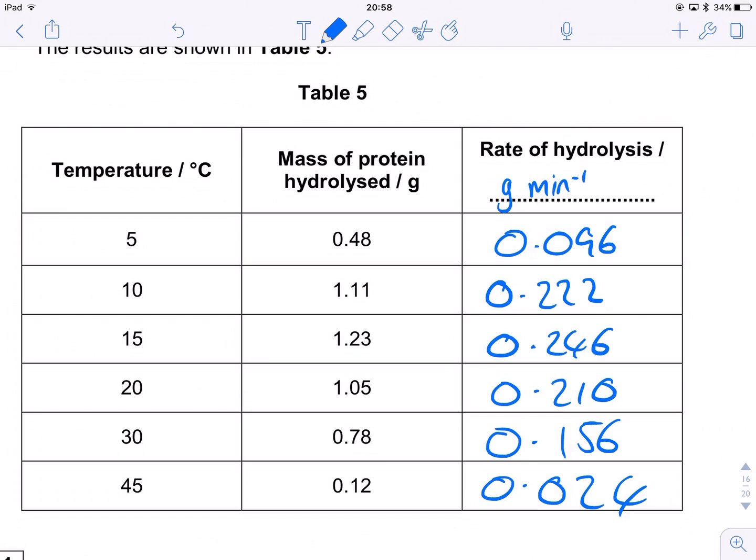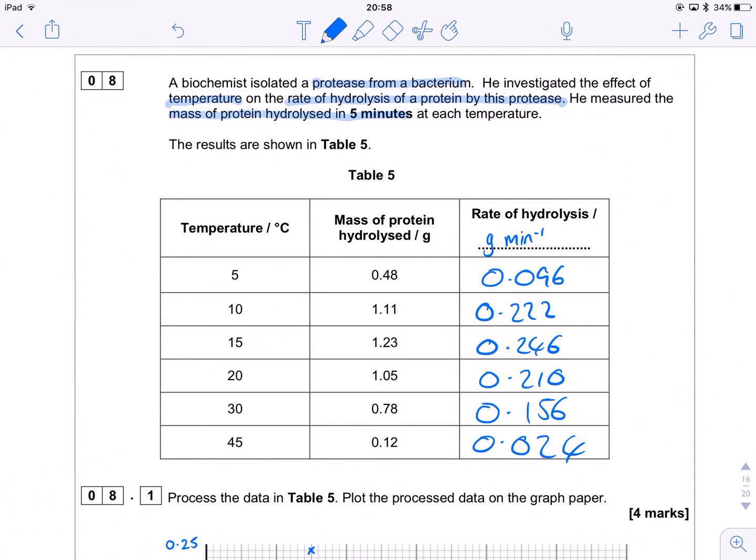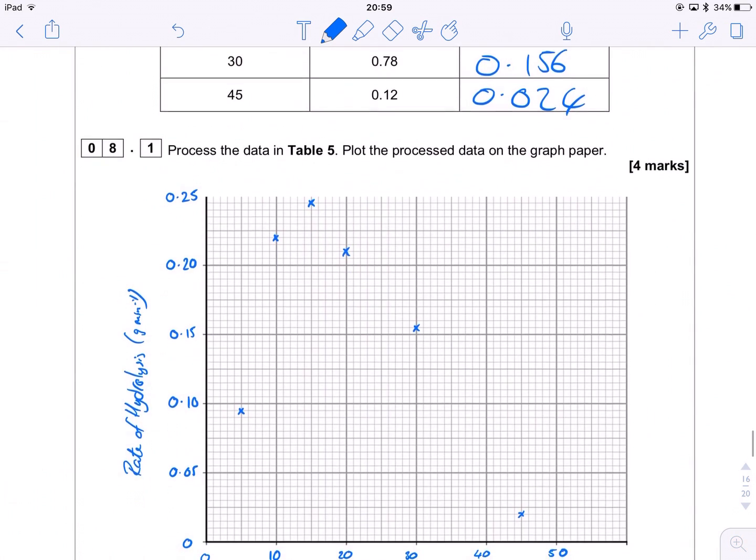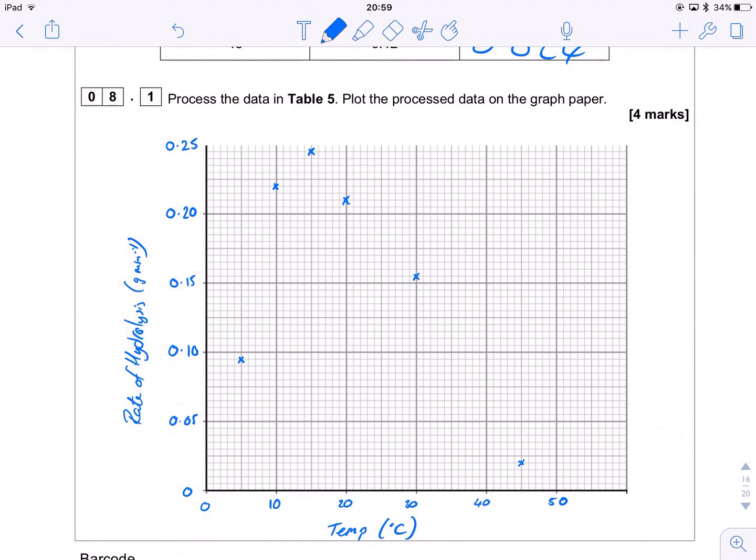What it now wants us to do is stick them on a graph. So to save time, I've already chosen the scale. It's actually quite nice. I've gone up in 10s across the x-axis for our independent variable temperature. And then I've gone up in 0.05s for our dependent variable. That's our rate of hydrolysis that we've just calculated. And I've plotted all of these points on here nice and accurately for you guys.